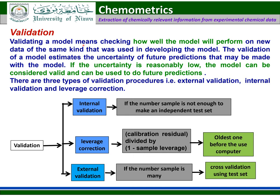Validation means checking how well the model will perform for future prediction of unknown samples. There are three types of validation procedure: external validation, leverage correction, and internal validation. If the number of samples is many, then the best validation method is the external validation method.